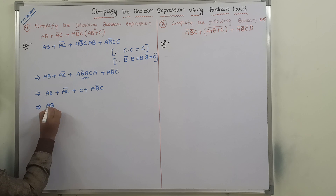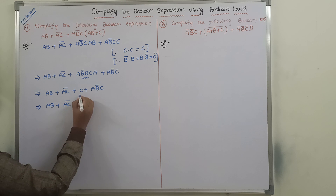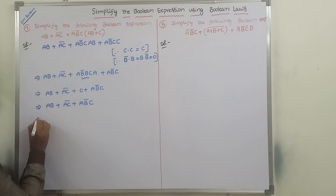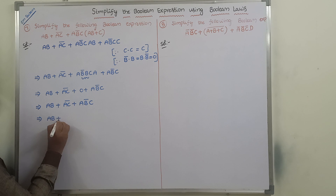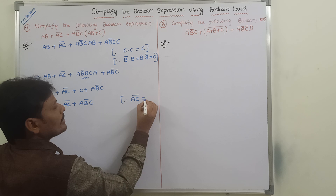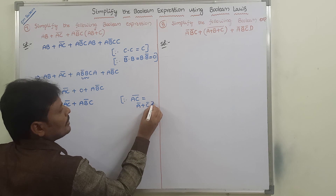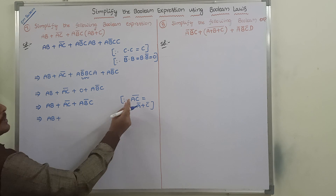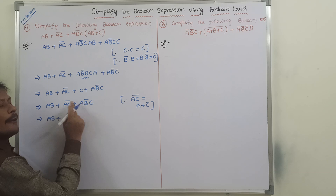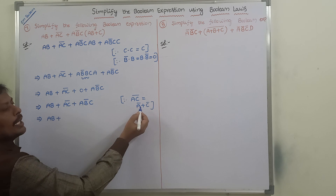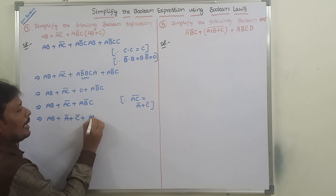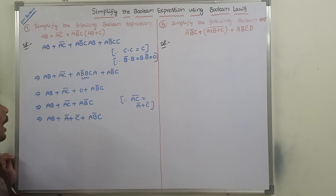A·B̄·C plus zero plus something is just that something, so we have (AB + AC) whole bar plus A·B̄·C. Now, according to DeMorgan's law, (AC) whole bar equals Ā + C̄. Substituting this, (AB + AC) whole bar becomes Ā + C̄. So the expression becomes Ā + C̄ plus A·B̄·C.